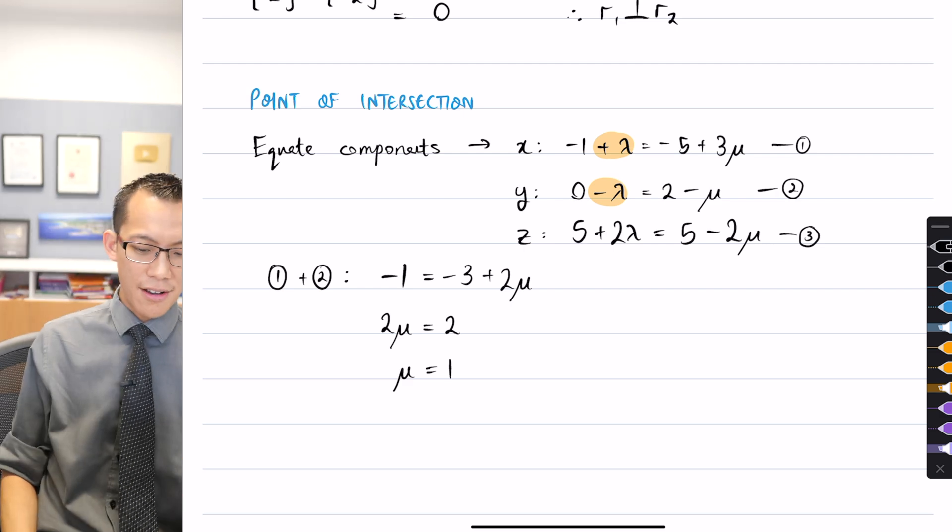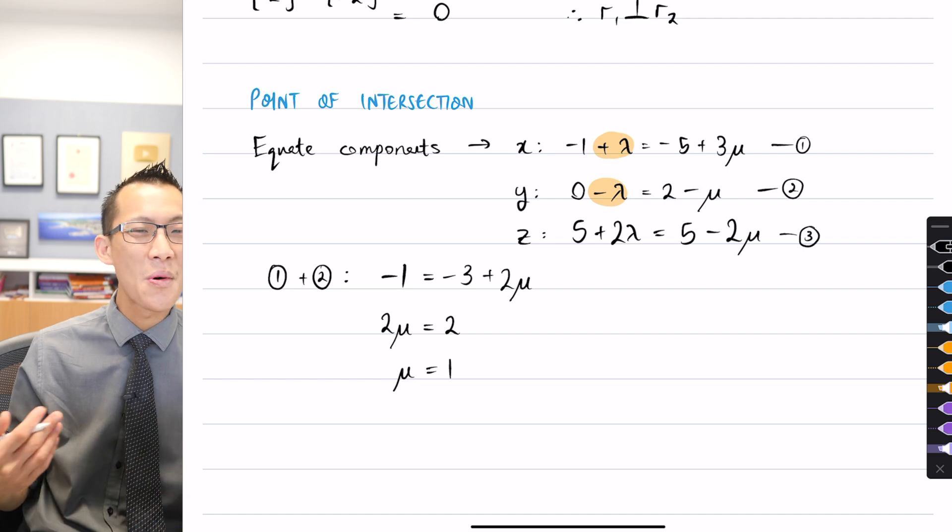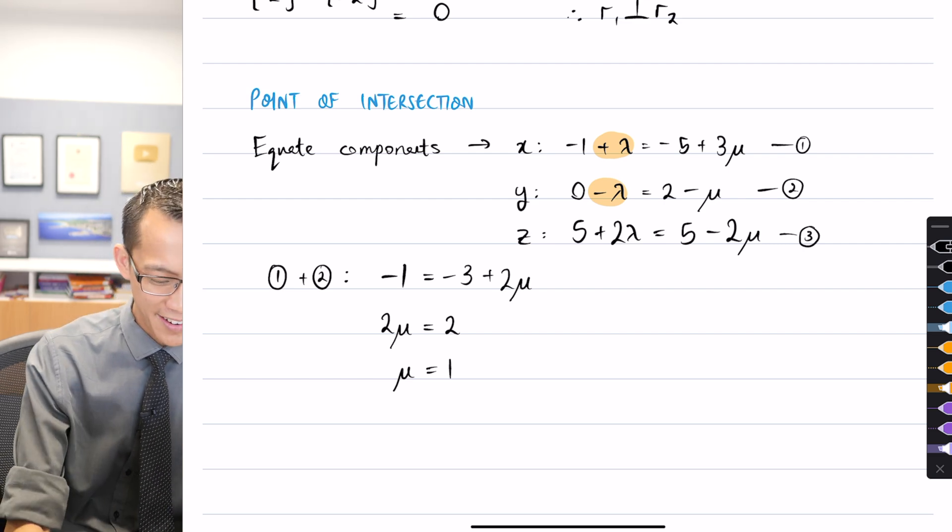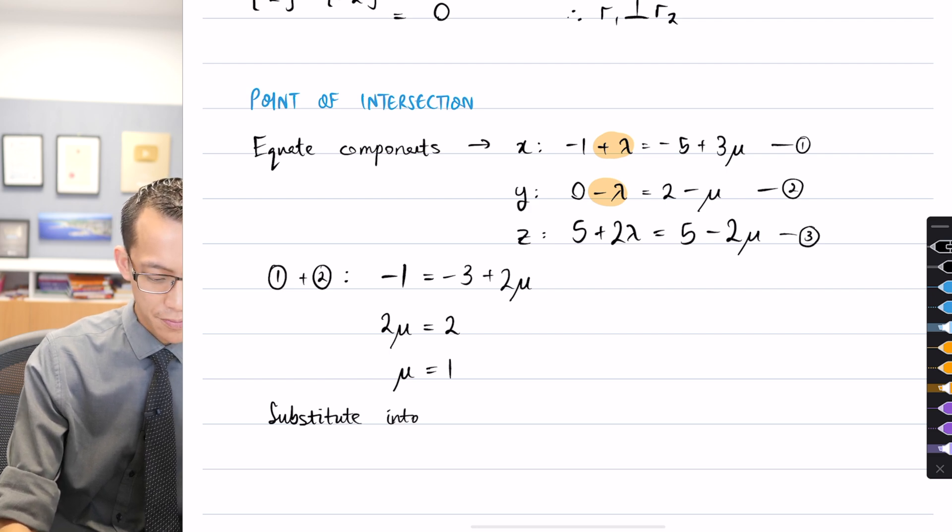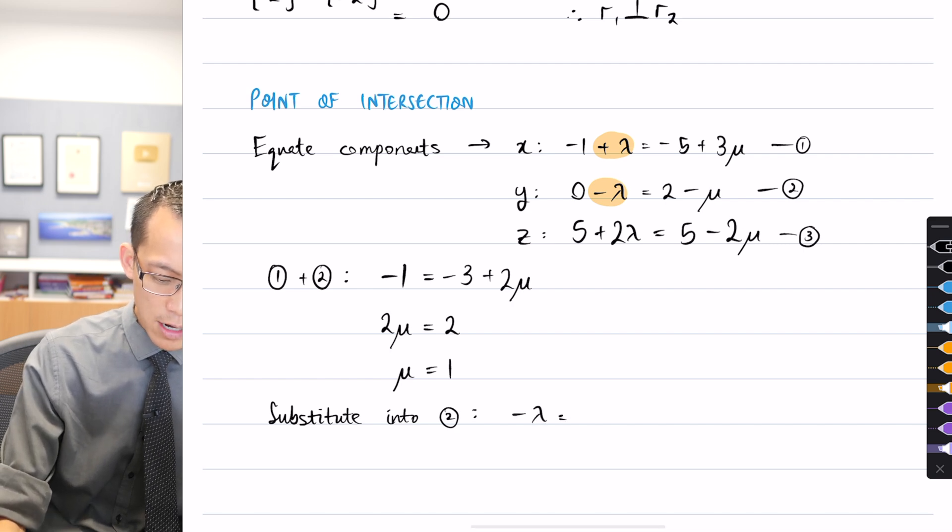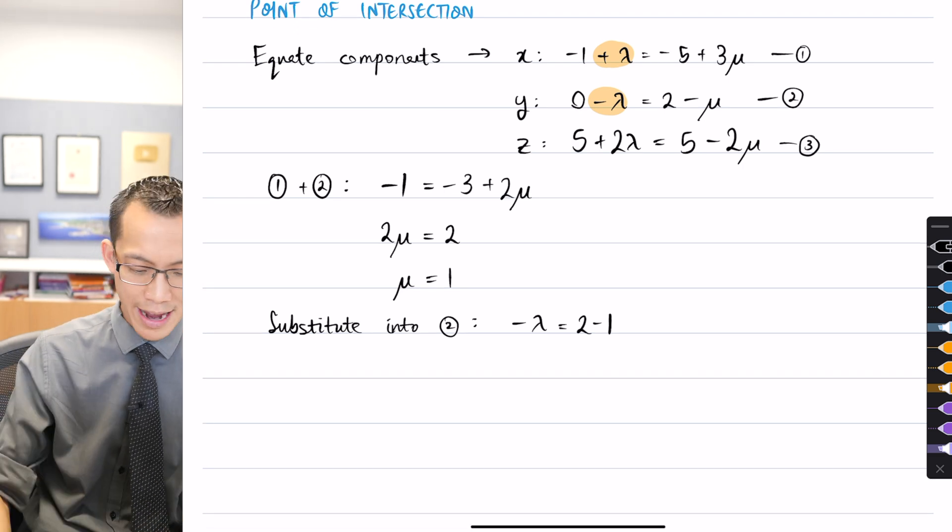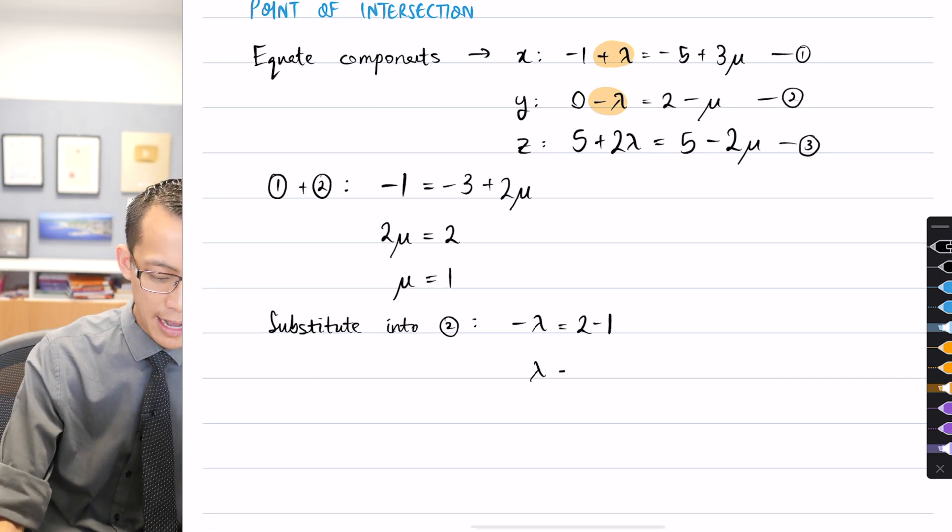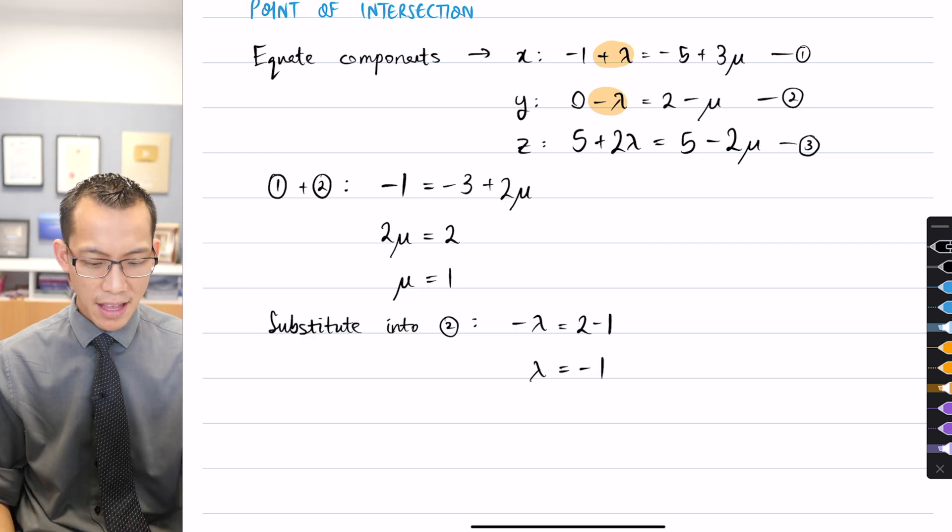Now at this point, my value for mu, I can substitute that into any one of three equations. Which one would you like? Two. Okay, two is fine. Let's go into two. So I've got here minus lambda equals two take away one. So obviously there's one on the right-hand side, and I can multiply both sides by negative one. So that gives me this.